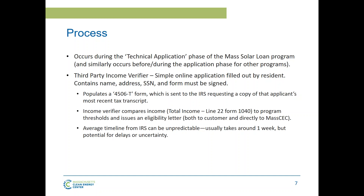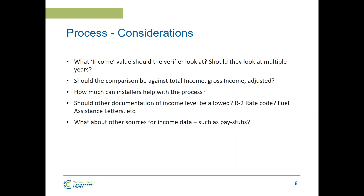We chose this process in part because it provides a high degree of confidence — this income data is coming directly from the IRS. However, it does involve the IRS and there can be unpredictable timelines, averaging about one week but with significant variability. Key considerations in the verification process include: what income value the verifier should look at — we look at only the most recent year available for simplicity; whether to use total income versus gross or adjusted gross income — we use total income because that aligns with census-reported values used to populate the LIHEAP state median data.